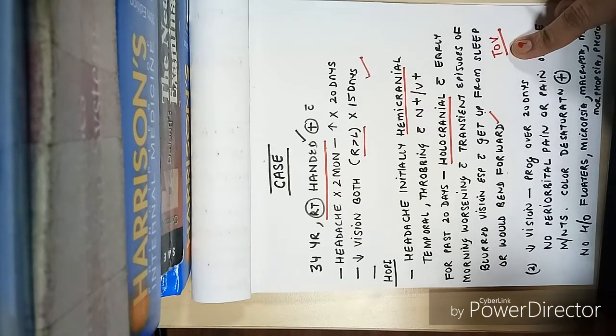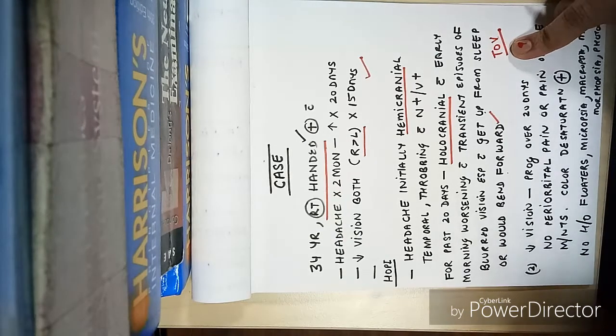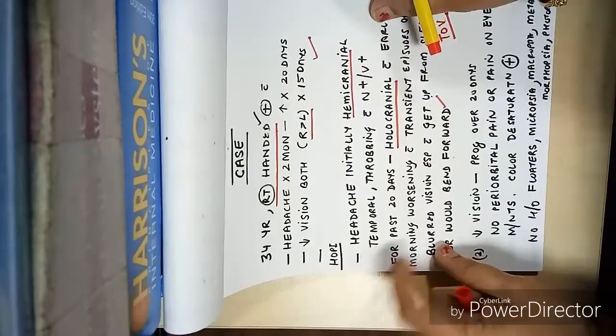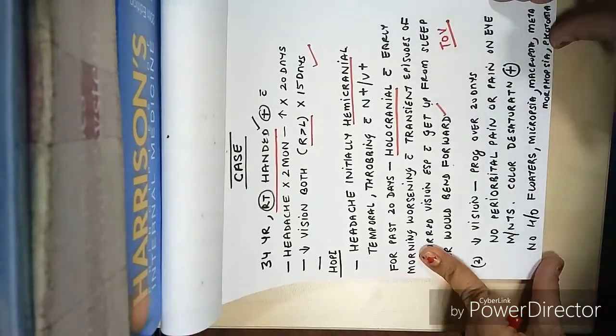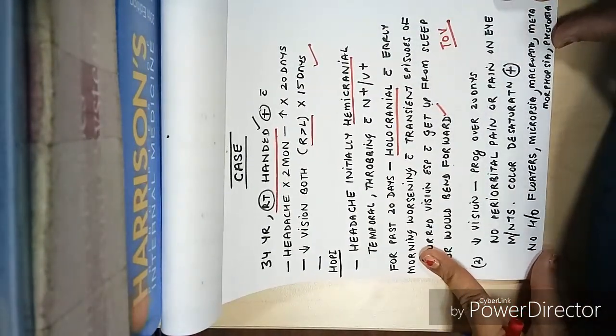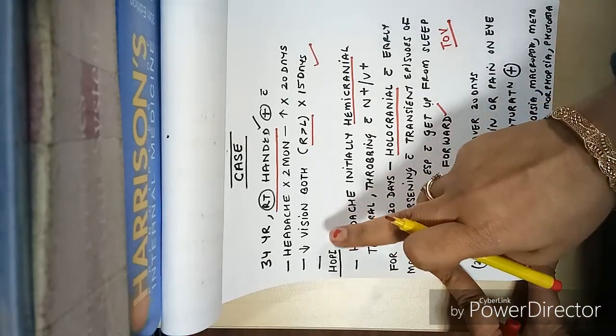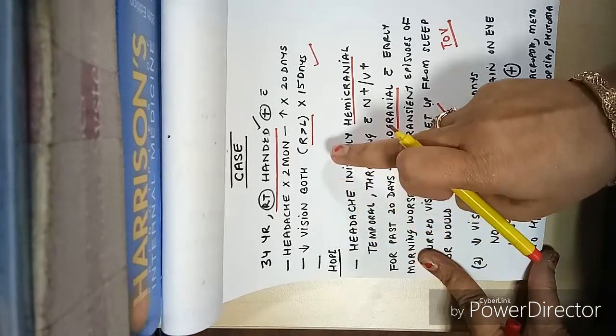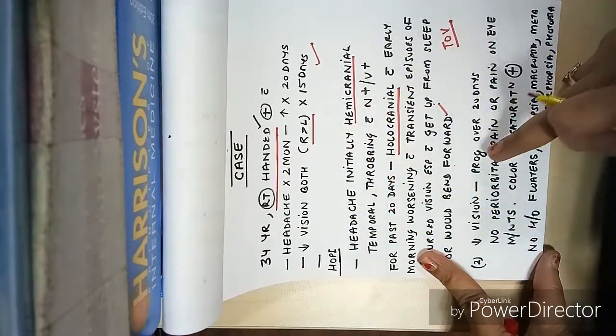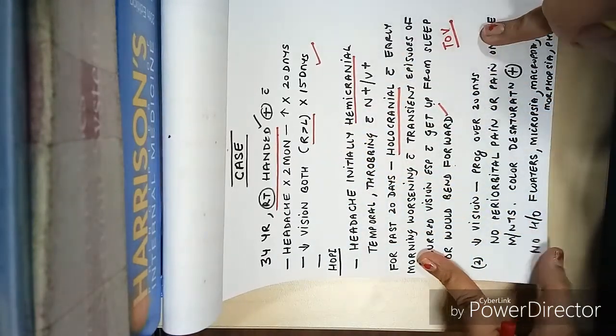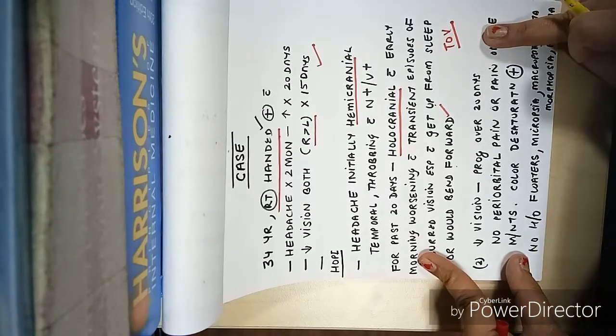Then comes history of decreased vision. How will you take the history of decreased vision? You will say whether it is present in one eye or both eyes. In this patient there was decreased vision in both eyes which was progressive over 20 days.